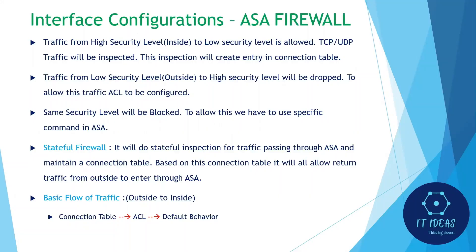Generally in ASA, traffic flowing from high security level to low security level will be allowed. High security level is considered the inside network; other networks are considered low security or untrusted. When traffic flows from inside to outside, the ASA will inspect TCP and UDP traffic and create a connection table for those sessions.